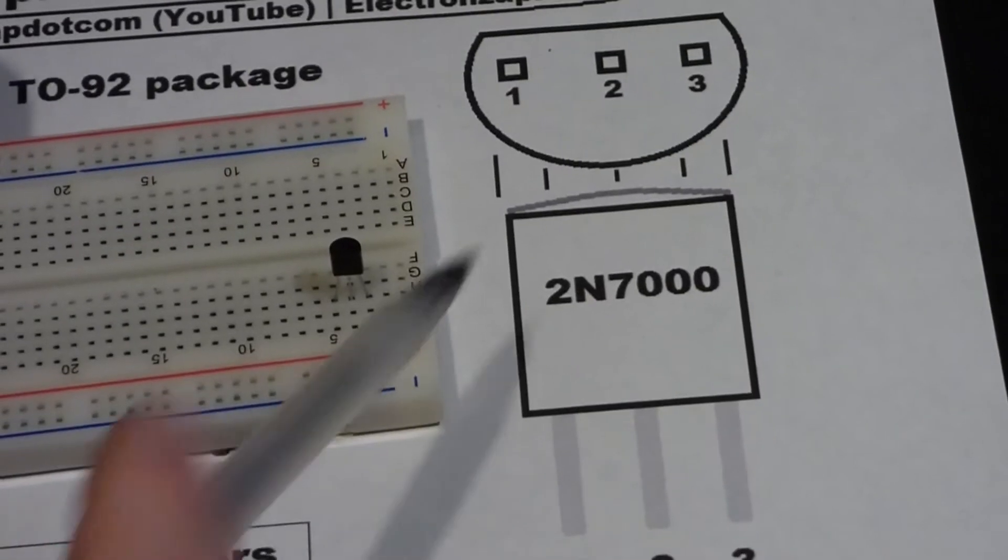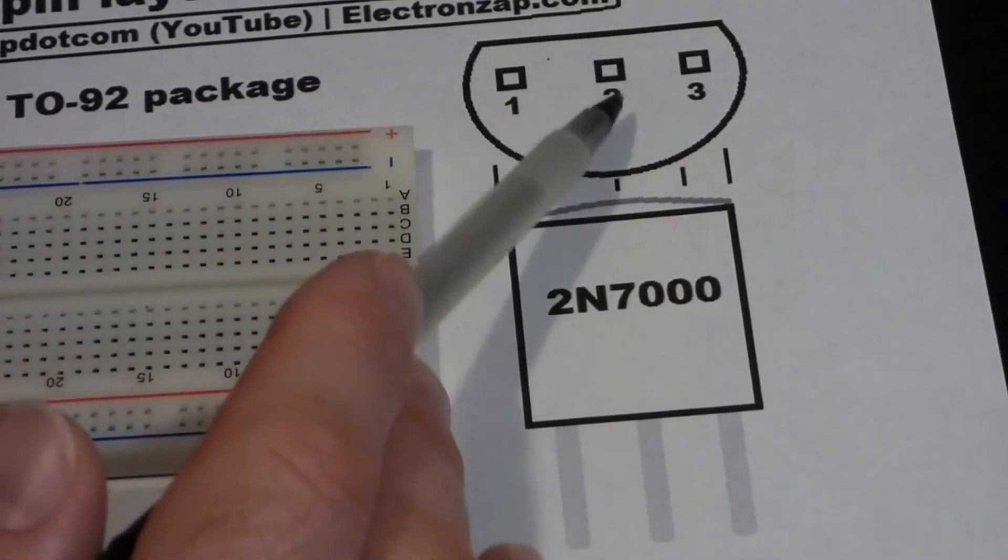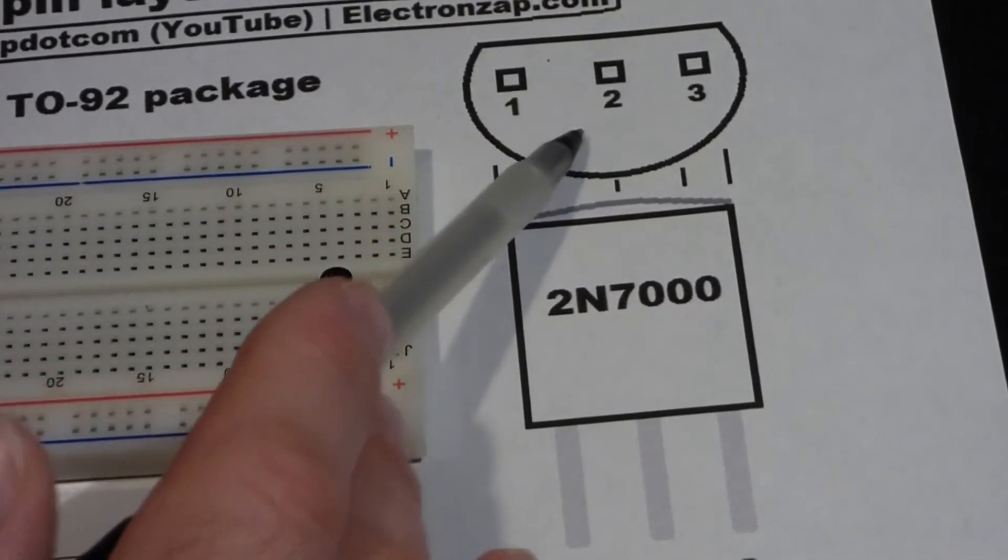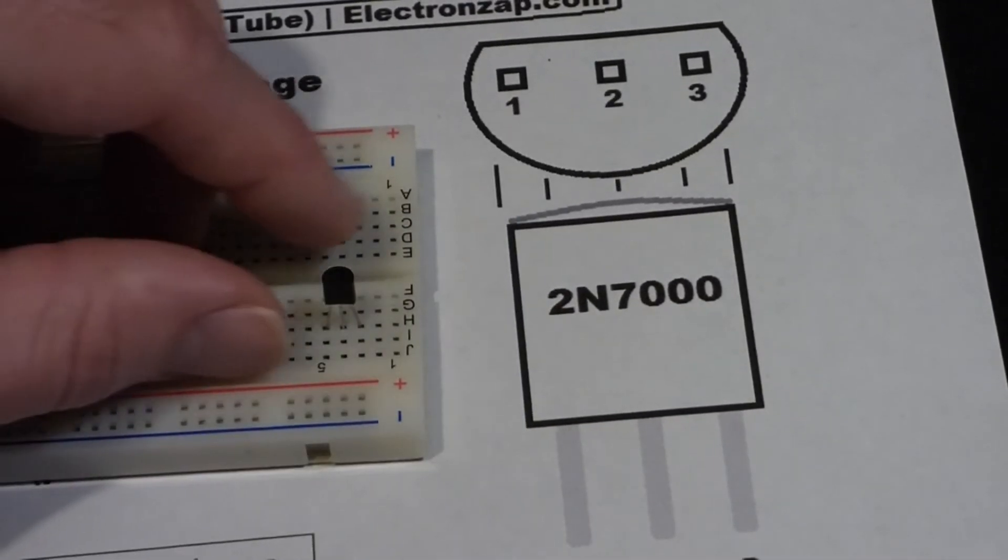It's pretty straightforward. Now above this, sometimes the datasheet will have this image above it or you may only have this image. It may be above this image or it may be by itself.